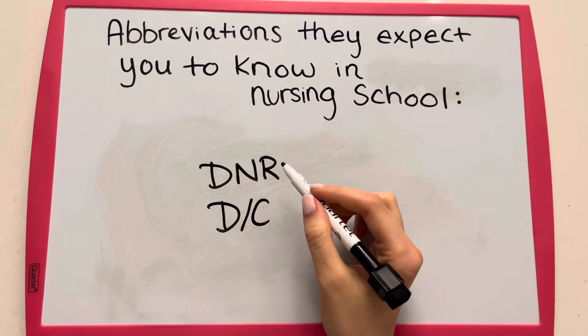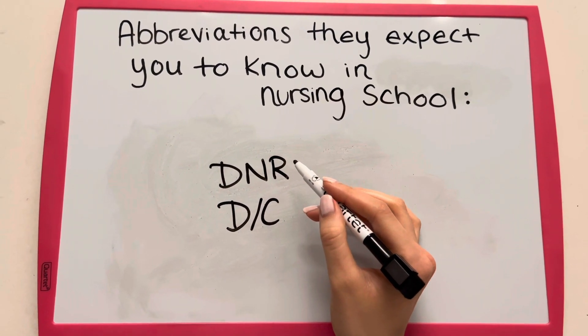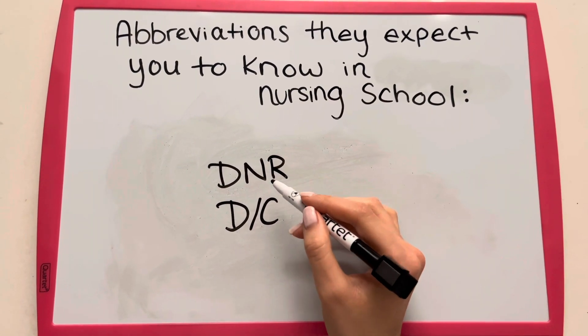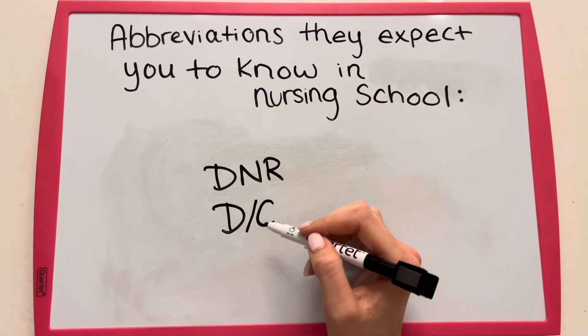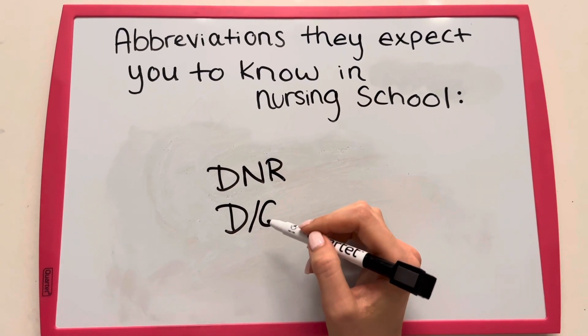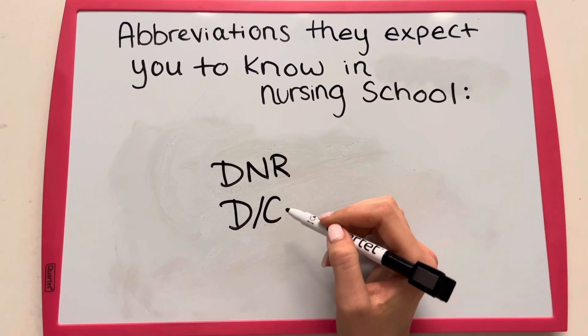DNR is a code status and it is the opposite of a full code. DNR is do not resuscitate, and DC means discharge.